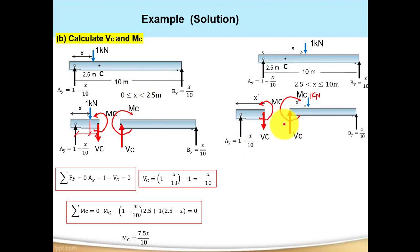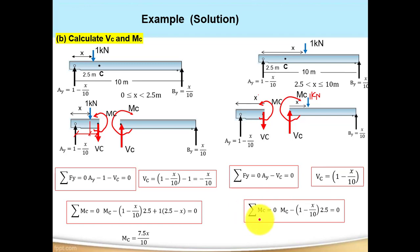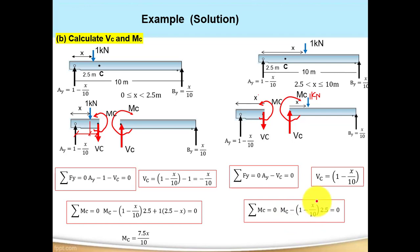Now let us calculate Vc and Mc for the right beam segment, with the load to the right of C (2.5 ≤ X ≤ 10). Taking the left segment: summation of forces in Y = 0, so Ay − Vc = 0, giving Vc = 1 − X/10. For Mc: summation of moments about C = 0. Mc (counterclockwise, positive) minus Ay × 2.5 = 0, so Mc = (1 − X/10) × 2.5 = 2.5 − 2.5X/10.